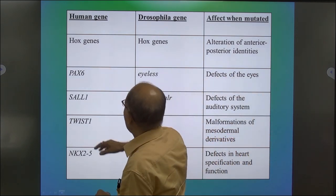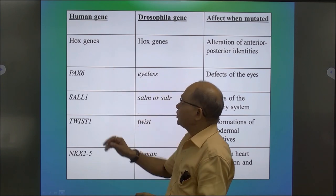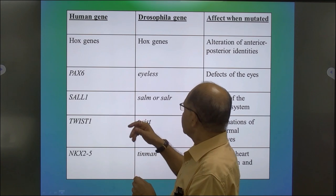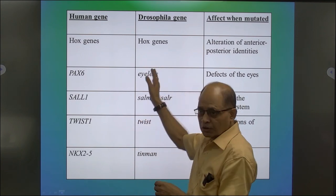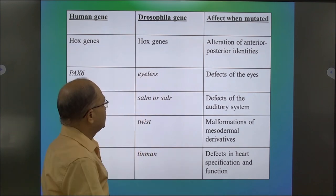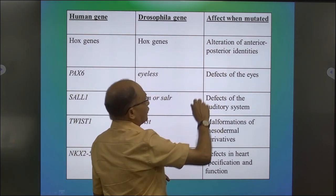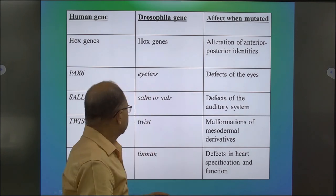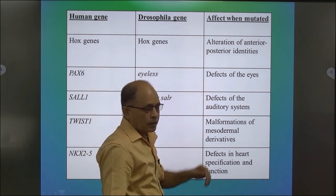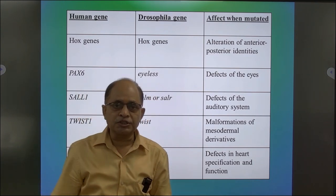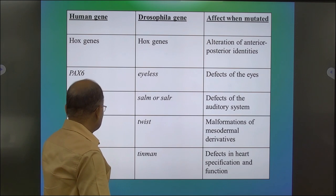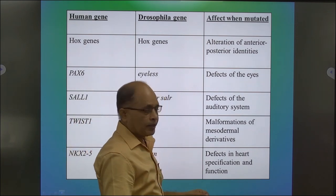Here I have a table in which different genes found in humans also have equivalents in Drosophila — like Hox genes, which are conserved across the animal kingdom and responsible for altering anterior-posterior identities. Similarly, Pax genes correspond to the eyeless gene, responsible for defects in eyes. Salivan, twist, tinman, and several others are also represented.